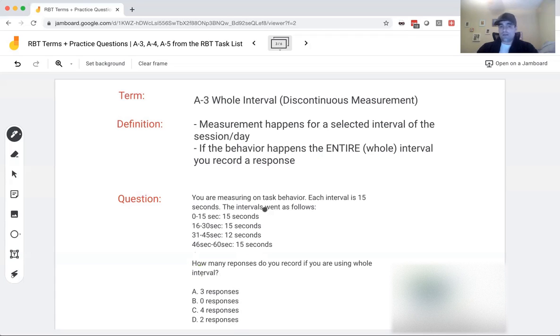Let's look at our data. Whole interval, we need it to happen the entire time. So the first 15 seconds, it happened 15 seconds. Yes. Second 15 happened 15. Yes. Third 15 only happened 12. The behavior happened, but not during the entire time. Therefore, we do not record it. Finally, the last time, it happened the entire 15. So what do we get? We get 75%. We get three out of four. How many responses are we going to record? One, two, three. We're going to record three responses.